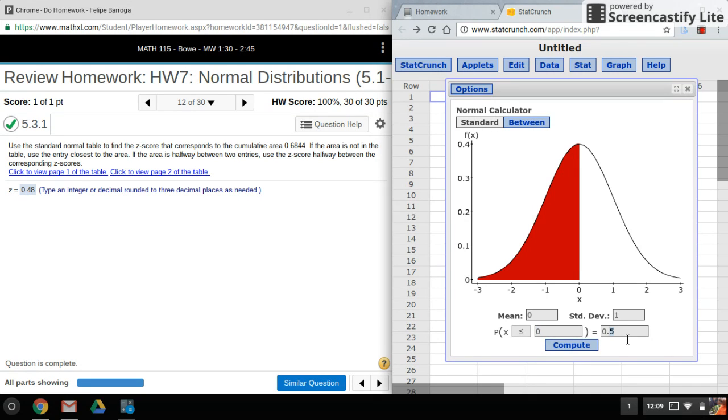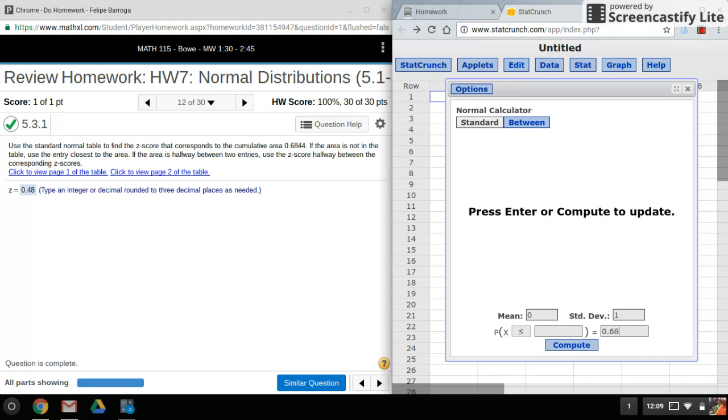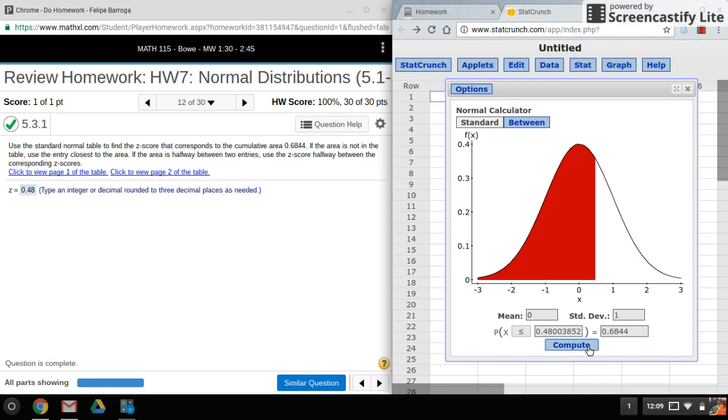We'll actually be inputting into this box here. For this problem, we want to find the cumulative area—I mean, we're given the cumulative area, so this will go here. Type that in. Now a cumulative area is going to be the area to the left, so as you can see the left side of the graph should be shaded. All right, and we've got the correct z-score here.